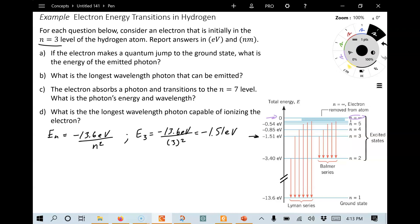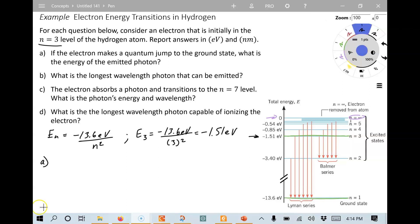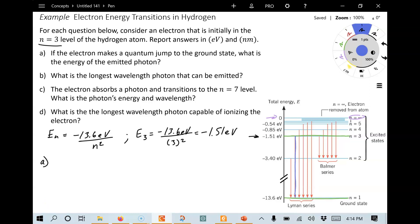In part A, we are asked, if the electron makes a quantum jump to the ground state, what is the energy of the emitted photon? So in this case, we're thinking here, okay, we're starting right here, level three. And then we're going to go all the way down to the ground state. In other words, we're making this particular transition, which is part of the Lyman series. We need to calculate that energy difference. That's the energy of the emitted photon.